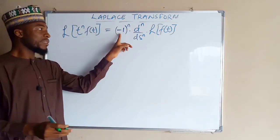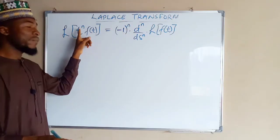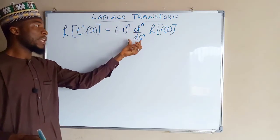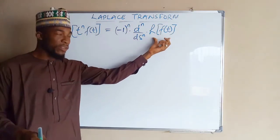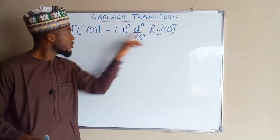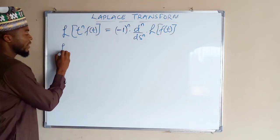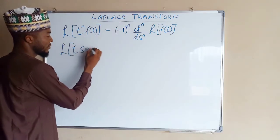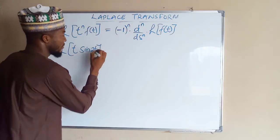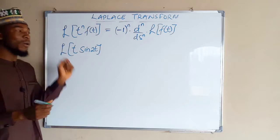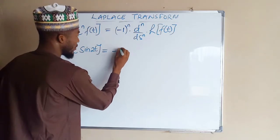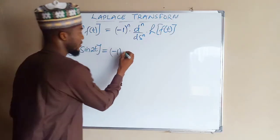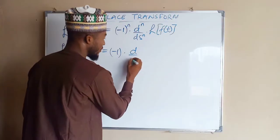So you take negative 1 raised to the power of n. If n is equal to 2, you raise negative 1 to the power of 2 and take the second derivative of the Laplace transform. Suppose we are asked to find the Laplace transform of t times sine 2t — t is to the first power — this is the same as negative 1 raised to the power of 1, times the first derivative, because the power of t is 1.